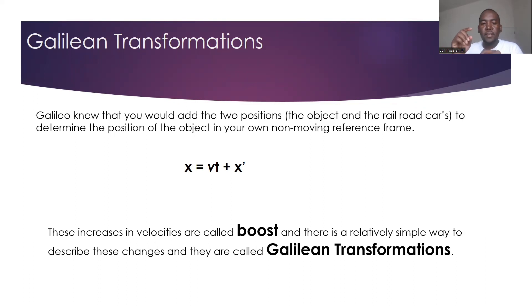So we call the x with the little dot at the top x prime. So you'll hear once it has that little dot at the top, it will be referred to as prime. So we have the x prime, y prime. You will see that being used regularly. So these increases in velocities are called boost, and there is a relatively simple way to describe these changes as they are called Galilean transformations.